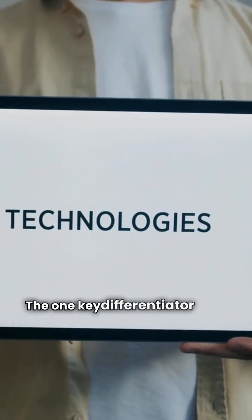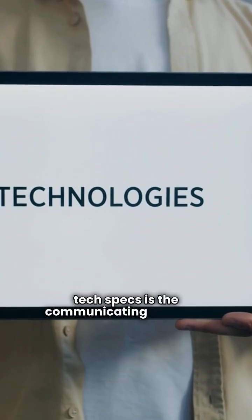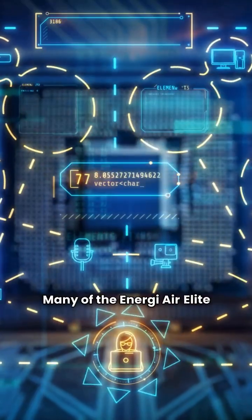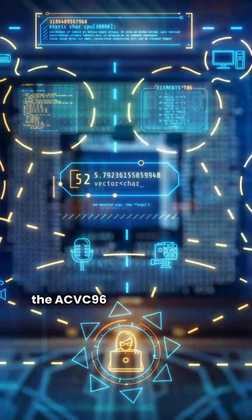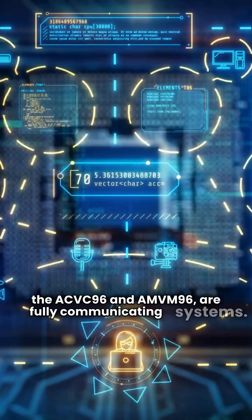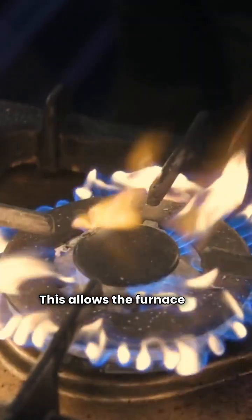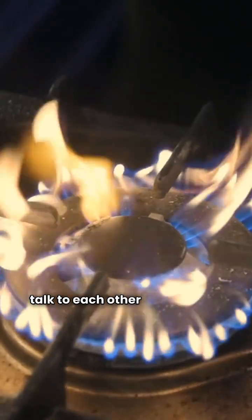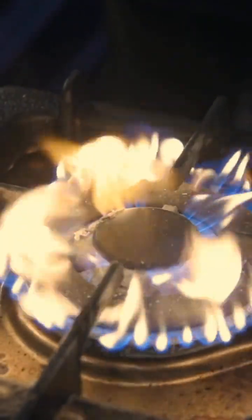The one key differentiator in the tech specs is the communicating features. Many of the Energy Air Elite models like the ACVC96 and AMVM96 are fully communicating systems. This allows the furnace and other components to talk to each other to fine-tune operation.